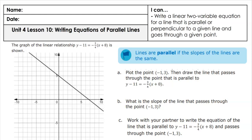Today we're focusing on parallel lines, and we're going to write the different equations of parallel lines. We have three forms of lines: standard form, point-slope, and slope y-intercept. They're not going away — they are staying to play. Now we're going to do it with parallel lines. What do we know about parallel lines? Same slope, different y-intercept. We're putting two things you already know together.